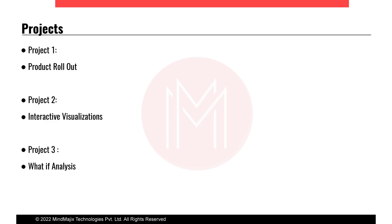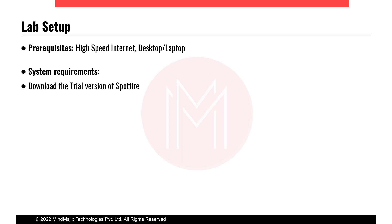The projects covered during training will include: first, a product rollout project — a simpler project where trainees build multiple visualizations from data to see insights; second, a project on interactive visualizations and manipulating data using property controls and buttons in Spotfire; and third, a what-if analysis project mostly based on predictive analysis in Spotfire. Prerequisites for the lab setup include high-speed internet, a desktop or laptop, and trainees must download the free trial version of Spotfire.